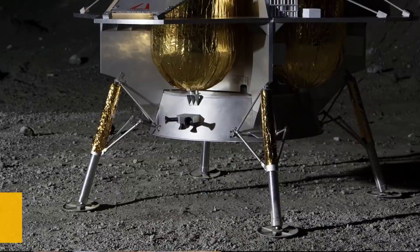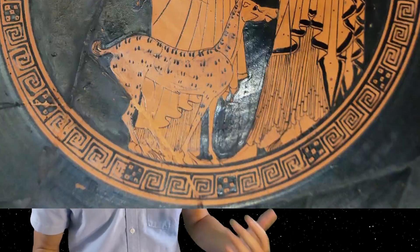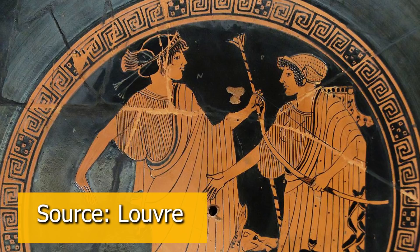NASA named their new project to go back to the moon Artemis, and it's very fitting because Artemis is the goddess of the moon, but it's also Apollo's sister. It's looking back to about 50 years ago when the Apollo missions were going to the moon.